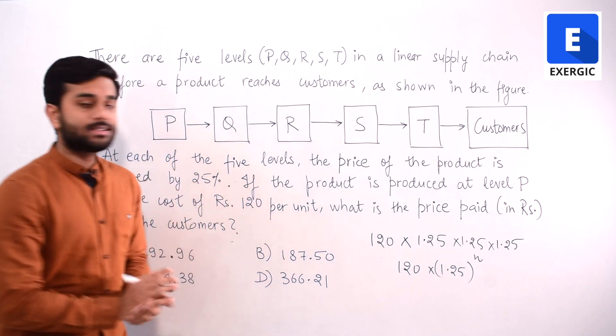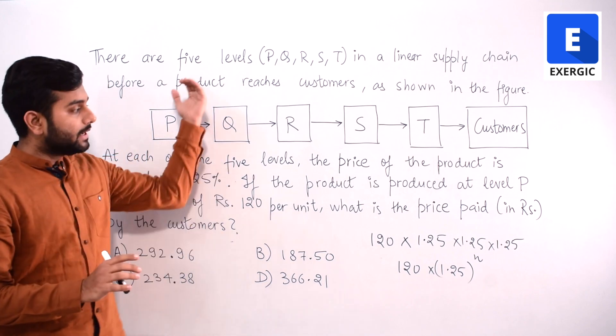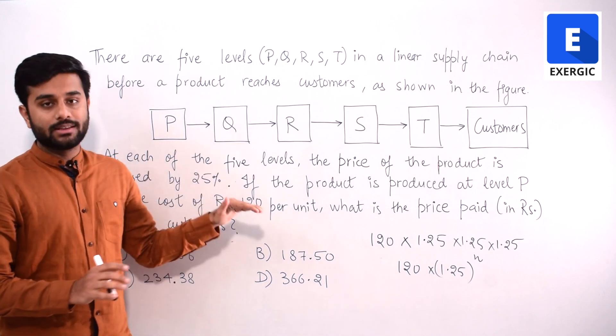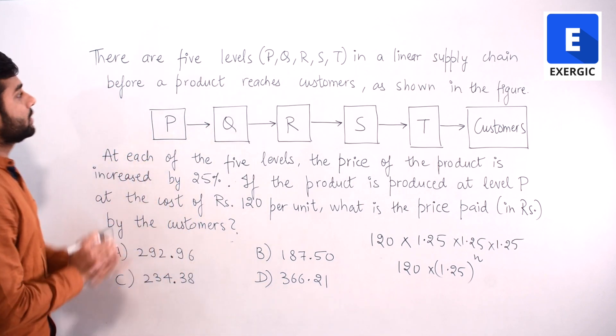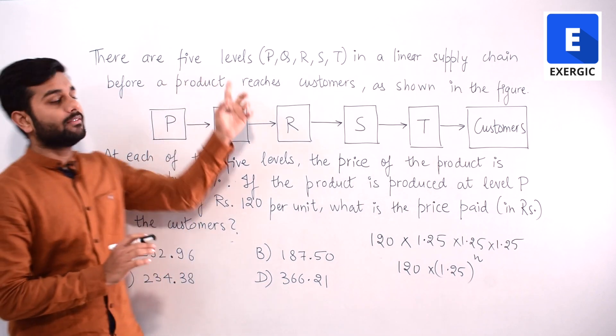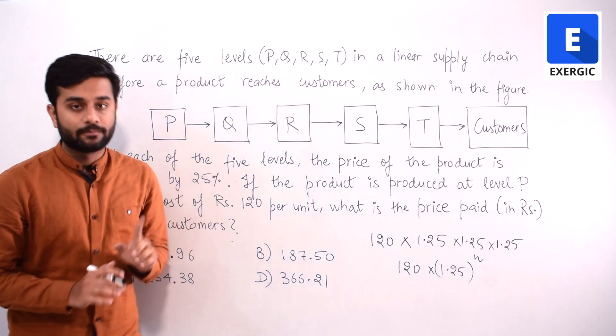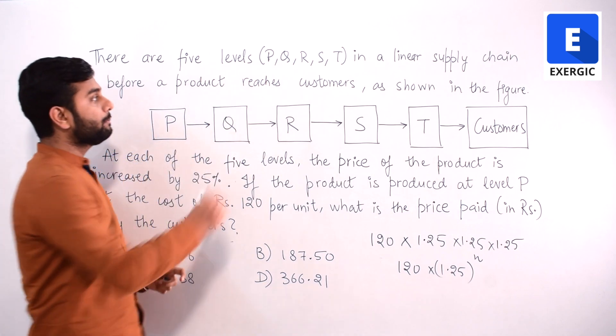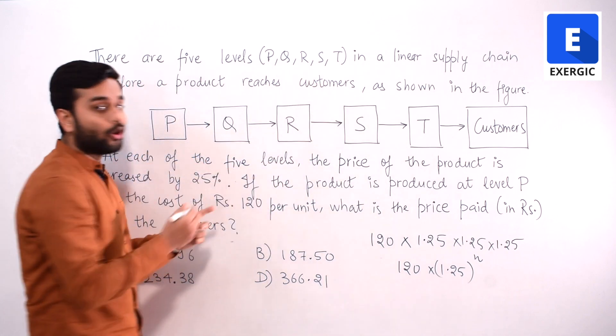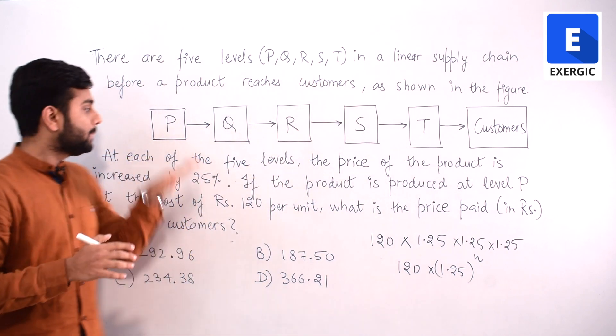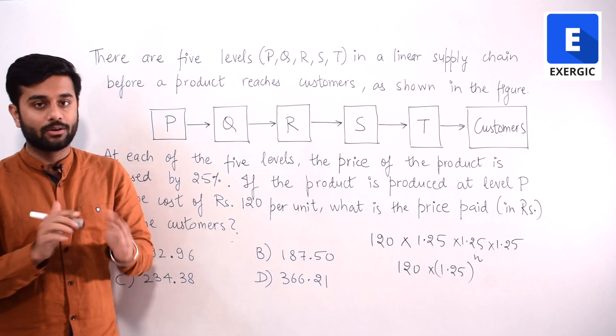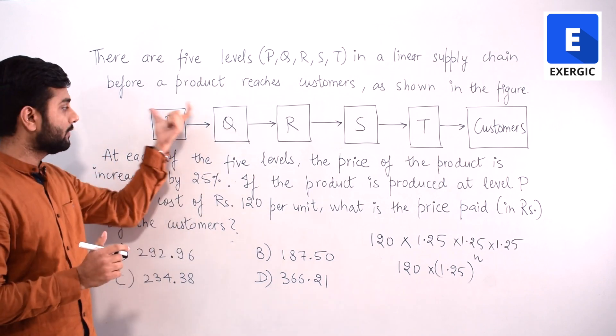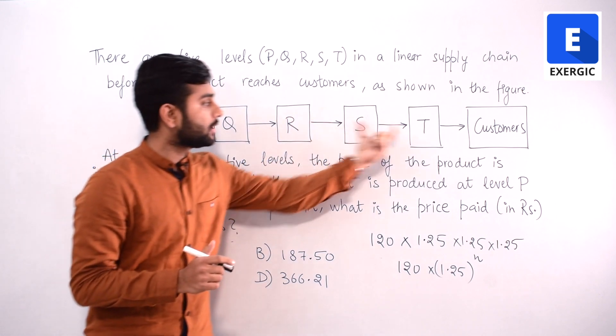First approach I will tell you by the normal data given in the question, and second approach I will give you the logical approach. Look, the question says that there are 5 levels P, Q, R, S, T. The question has mentioned that P, Q, R, S, T all of them are a level. P is also a level, Q is also a level. All of them are counted as 1 level. So level 1, 2, 3, 4 and 5.